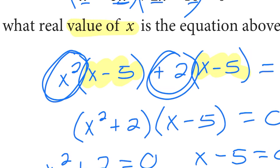And is it possible to have a squared term equal to a negative? No, definitely not. So that one is not a possible solution. However, when you add 5 to both sides, you get x equals 5, and this works. This is a real value that would make this equation true. So for number 18...